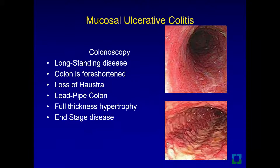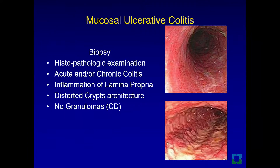In long-standing ulcerative colitis, the colon becomes foreshortened, loses its haustra, and looks like a lead pipe on imaging. This is due to full-thickness hypertrophy — although inflammation is localized to the mucosa, the whole wall becomes hypertrophied, considered end-stage disease. When biopsies are obtained, they show acute on top of chronic inflammation, localized to the lamina propria, with distorted crypt architecture and no granulomas — granulomas being a main feature of Crohn's disease.